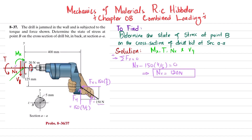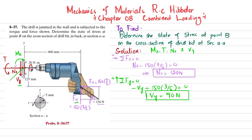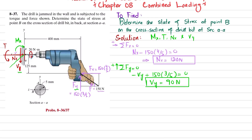We find Vy using the equilibrium equation: the sum of all forces along the y-direction equals zero, with upward force taken as positive. So −Vy + 150 × (3/5) = 0, giving Vy = 90 newtons.